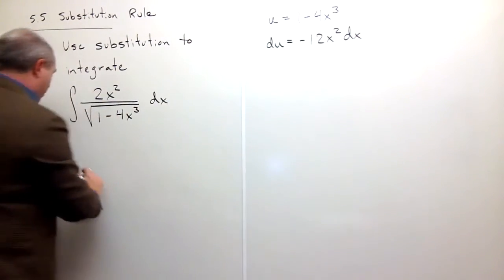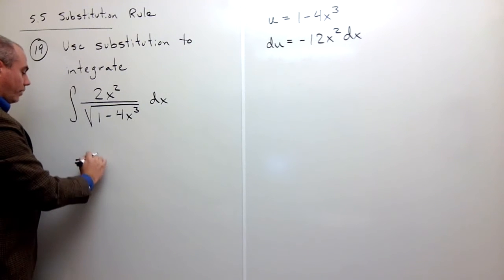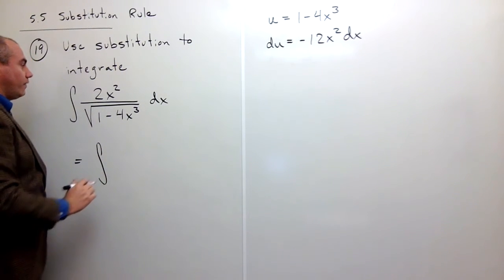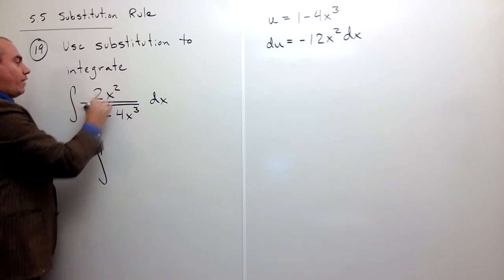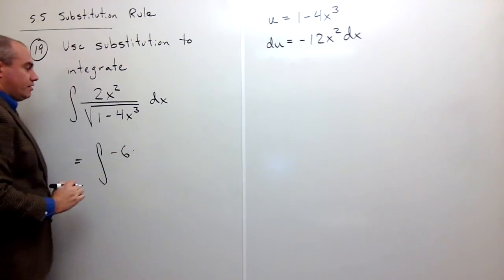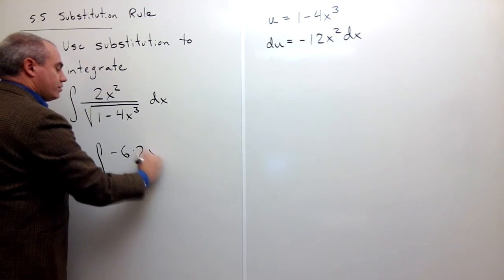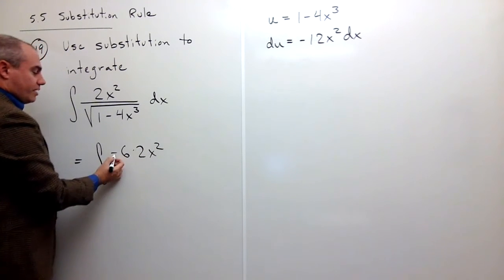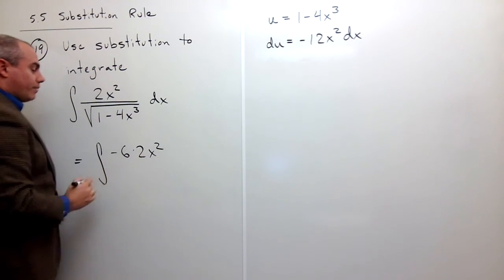So I could rewrite this integral the following way. This is the integral of, to get a negative 12 up here, I need to multiply by a minus 6. So then I've got times 2x squared. So notice that minus 6 times 2 is going to give me my minus 12.